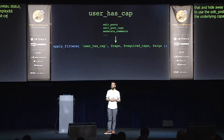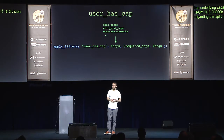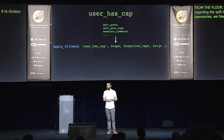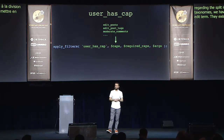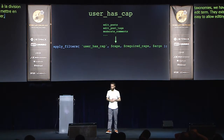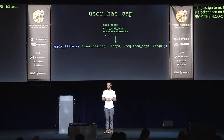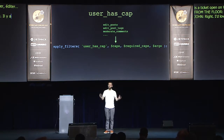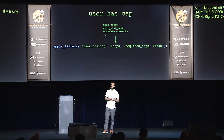Q: Regarding splitting capabilities — for taxonomies we have manage_terms but there's no create_term capability, only edit_term and delete_term. So it's not easy to allow editing and deleting but not creating. Is it possible and when will it be implemented? A: You're exactly right. We have edit_term, delete_term, assign_term, but not create_term currently. There is a ticket open on WordPress Trac to introduce the create_term capability. I'd love to get that in — it falls under making all taxonomy terms much more granular. If it's not in the 4.9 milestone, I'll go and move it in and hopefully we can get it done.